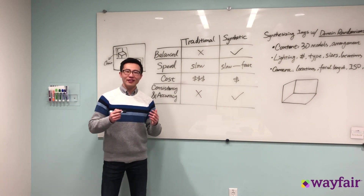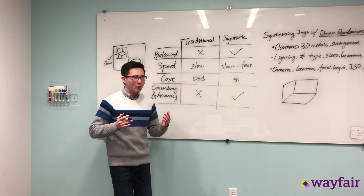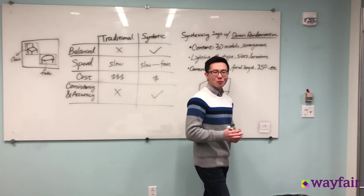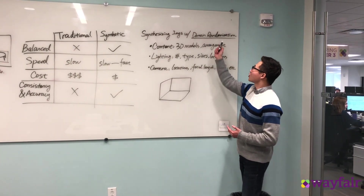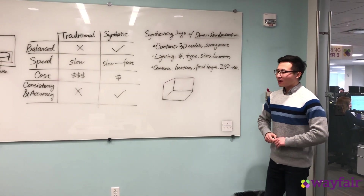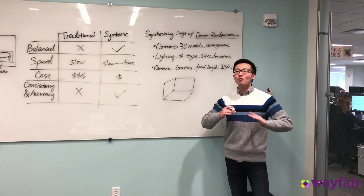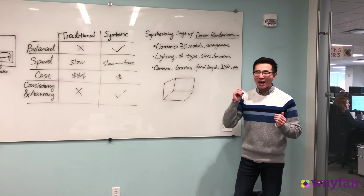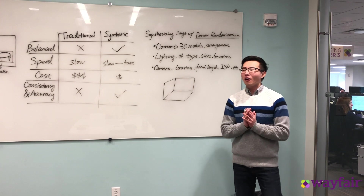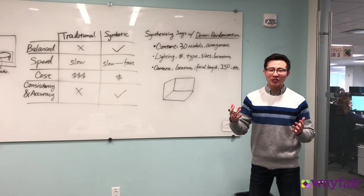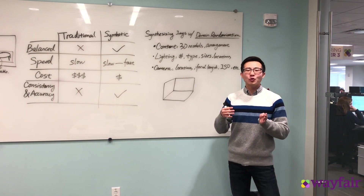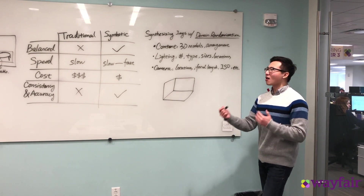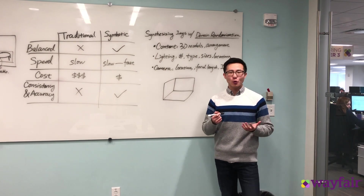So it sounds like the synthetic approach is the way to go. How do we do this at Wayfair? Before I answer that, I want to introduce the concept called domain randomization. What this means is that reality is really complex, and we want to make sure our training data is as diverse as possible so it captures all different kinds of scenarios. That helps the network generalize better on images it has not seen before. In the context of Wayfair, we care a lot about indoor spaces.